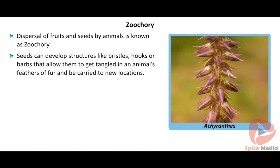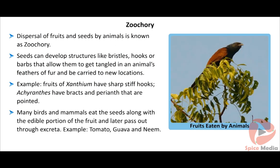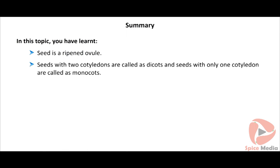Dispersal of fruits and seeds by animals is known as zoochory. Seeds can develop structures like bristles, hooks, or barbs that allow them to get tangled in an animal's feathers or fur and be carried to new locations. For example, fruits of Xanthium have sharp stiff hooks; Achyranthes has bracts and perianth that are pointed. Many birds and mammals eat seeds along with the edible portion of the fruit and later pass them out through excreta. Examples: tomato, guava, and neem.